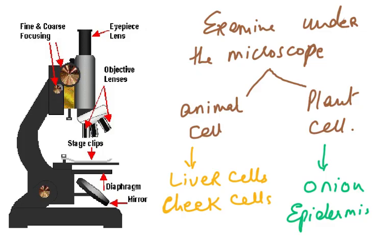The first point of the syllabus is to examine under the microscope an animal cell and a plant cell. For animal cells I suggest liver cells and cheek cells, and for plant cells, onion epidermis. You should be doing this practical work actually in the lab.